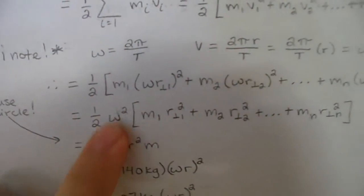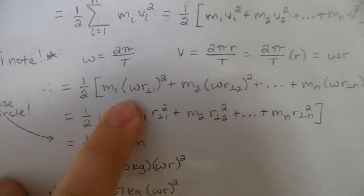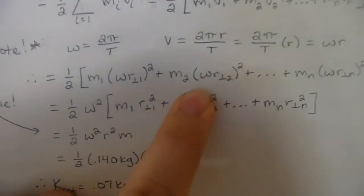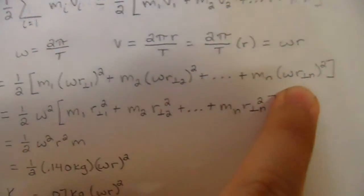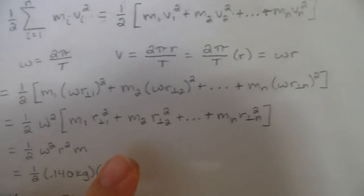And we plug that back into the equation. We're going to get this right here for our v each time. This omega times the perpendicular radius.